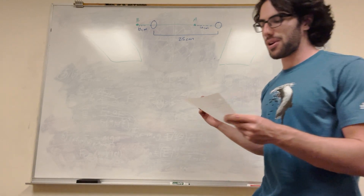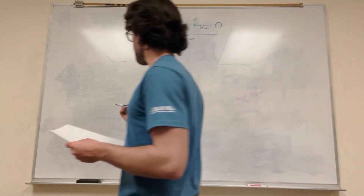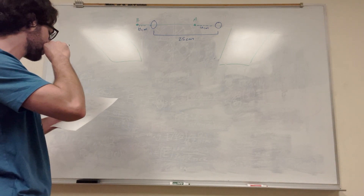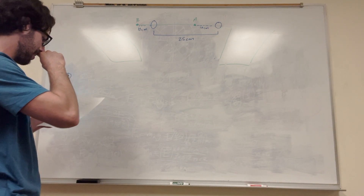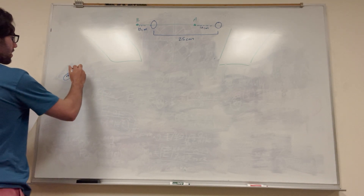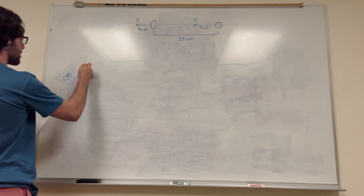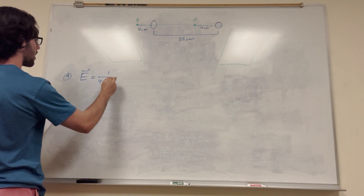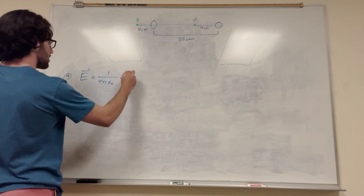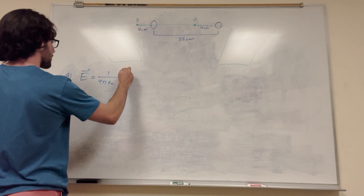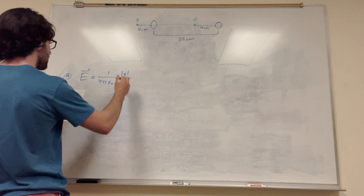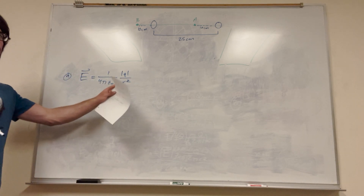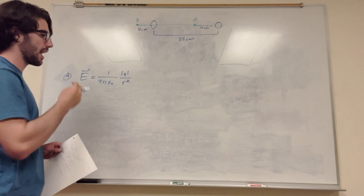So let's get started with part A. Part A wants us to find the electric field at A. It's pretty simple. The equation for the electric field we're going to be using is 1 over 4 pi epsilon naught times the magnitude of the charge acting on the point, over the radius squared between the two points. The radius is just the distance.